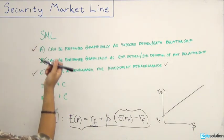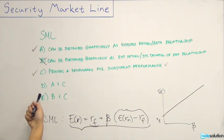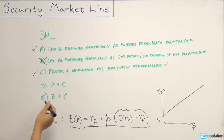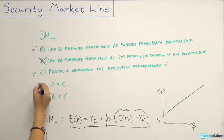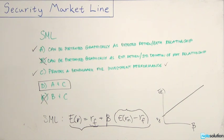Because two of these options are correct, let's see if it is option D or E that gives us both of these. So option E refers to the capital market line, which we already know is incorrect. So option D would be our best option to answer this question. So the security market line can both be portrayed graphically as expected return beta relationship and it could also provide a benchmark for investment performance evaluation.